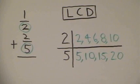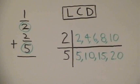If you couldn't find any common multiples, you'd keep multiplying out until you get a common multiple.